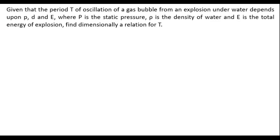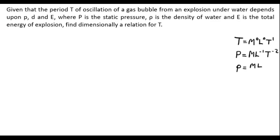Starting with period: T has dimensions M^0 L^0 T^1. Pressure has the dimensions M L^-1 T^-2. Density rho has the dimensions M L^-3 — remember it's mass over volume. And lastly, energy has the dimensions M L^2 T^-2.